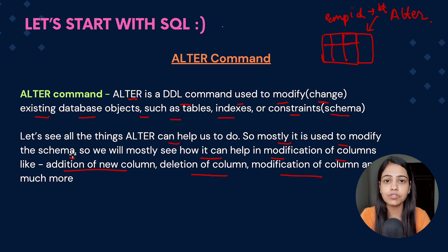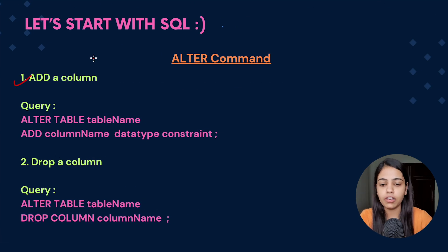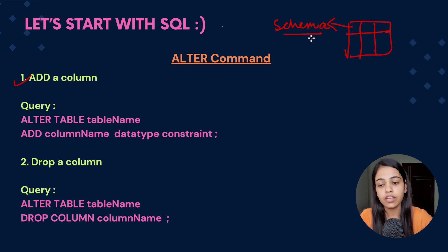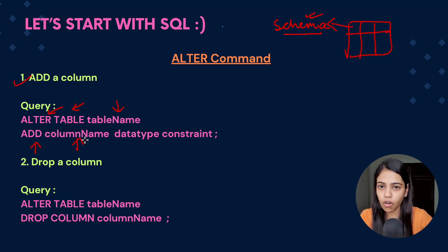Let's see how the ALTER command is used — the queries — and then we will go to the MySQL Workbench and execute all the queries. The very first use case is adding a column. ALTER command helps us in doing any modification in the schema. So whenever we want to add a column — basically doing some modification in the schema — we use the ALTER command. The query for adding a column is: ALTER TABLE, then the table name.